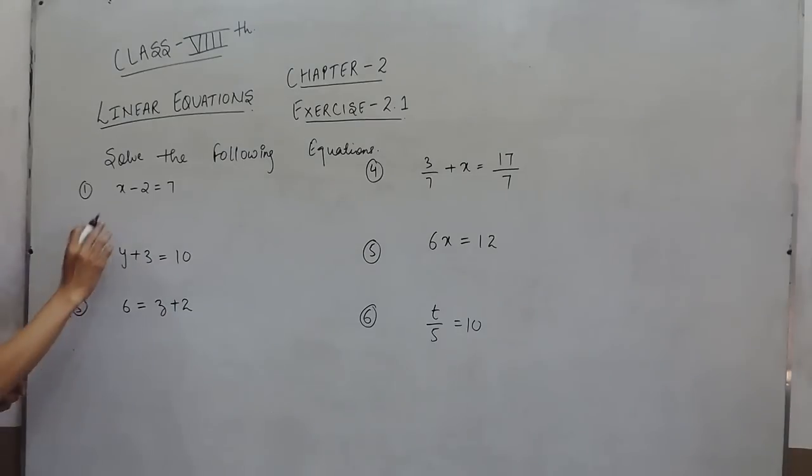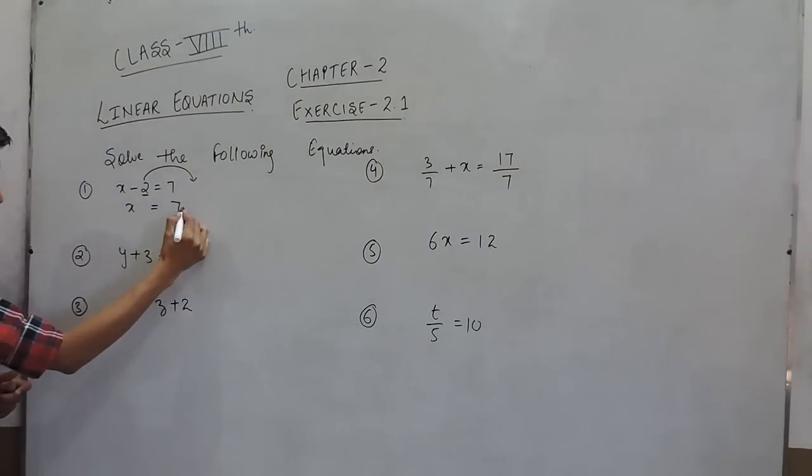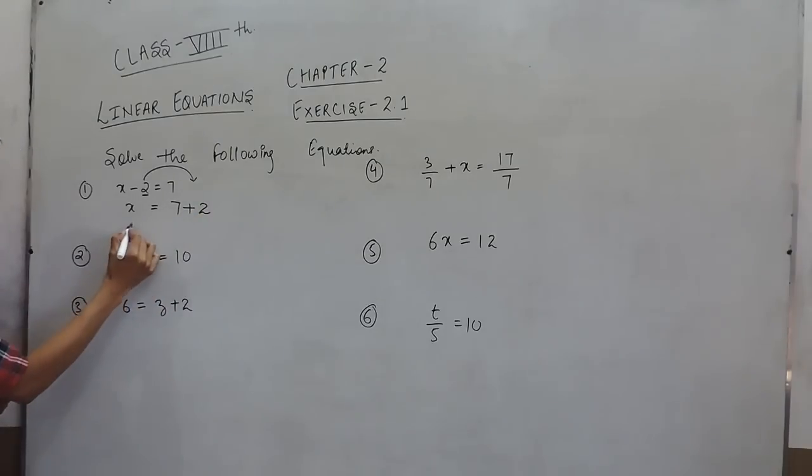First question is x minus 2 equals 7. We have to take this constant to the other side. The other terms will remain where they are, and this negative 2, when it goes to the other side, will become positive and we get the answer as 9.